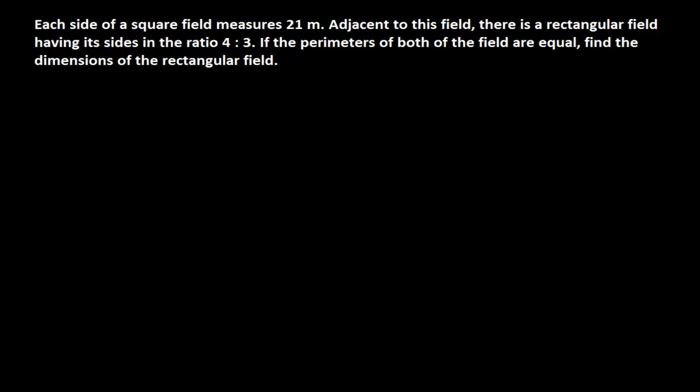Welcome friends once again. Here is a very nice problem. Each side of a square field measures 21 meter. Adjacent to this field, there is a rectangular field having its sides in the ratio 4:3. If the perimeters of both of the field are equal, find the dimensions of the rectangular field.